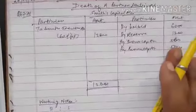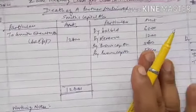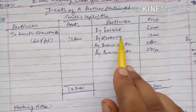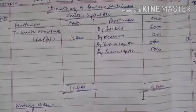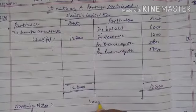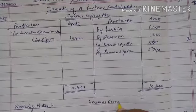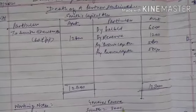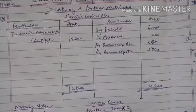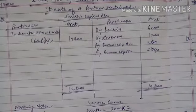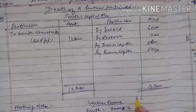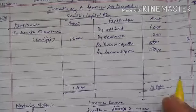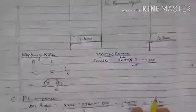Now we will be solving the question. I have already worked through it, so just pay attention. First, we carry down the capital. Then from the balance sheet, reserves are given as three thousand rupees. We calculate Smith's share of the general reserve: 3000 multiplied by 2/5, which equals 1200 rupees. So we write 1200 here.